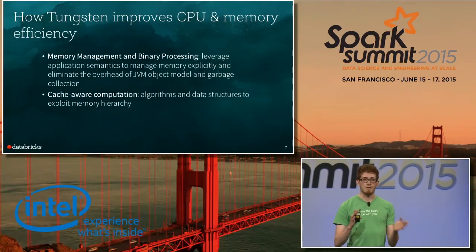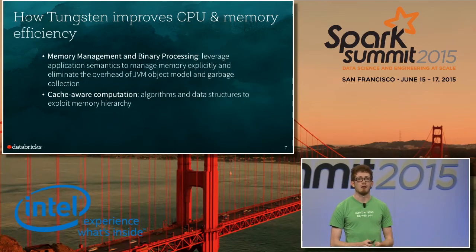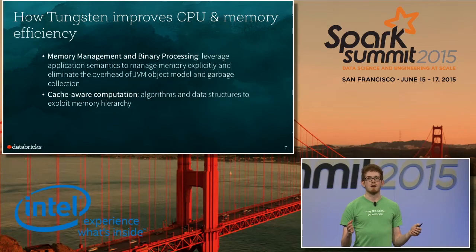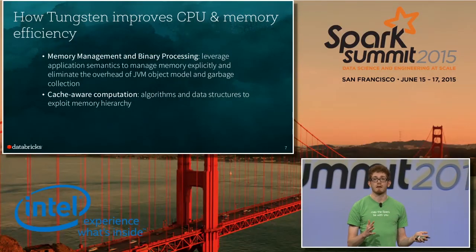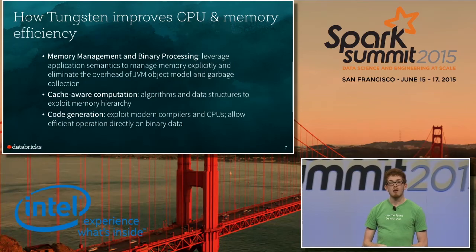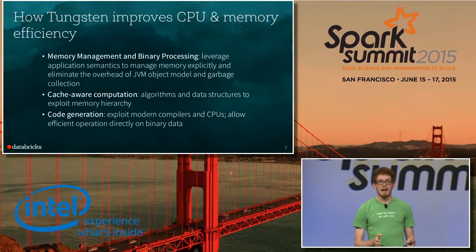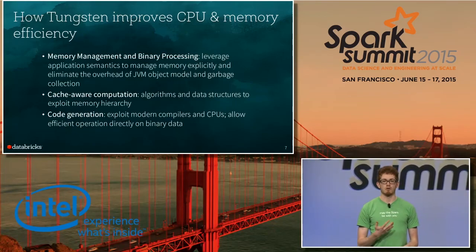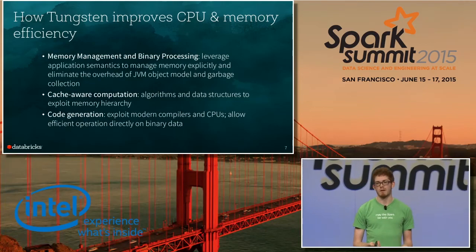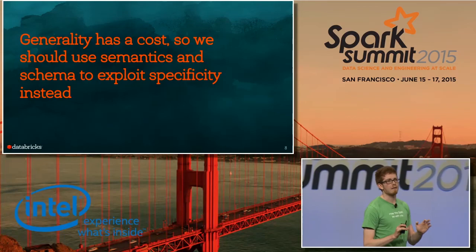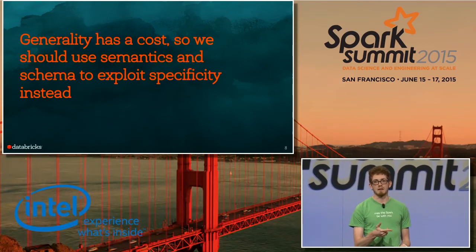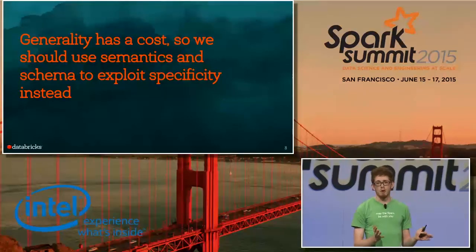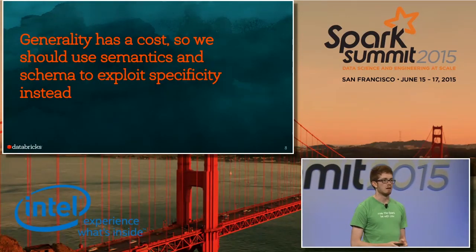Once you have this building block for laying out data manually, you can consider cache-aware optimizations. On modern processors, when your data fits in memory, memory access patterns still matter significantly — the difference between random memory accesses and a sequential scan can be quite significant. When you control your data layout, you can make it friendly for CPU cache efficiency. Finally, code generation: in various parts of Spark, we can actually generate bytecode on the fly to evaluate parts of your query, which can give large efficiency benefits. The unifying theme is that generality has a cost — when you have application semantics and know your data layout, you can implement special-purpose optimizations that give big wins compared to a more general system.